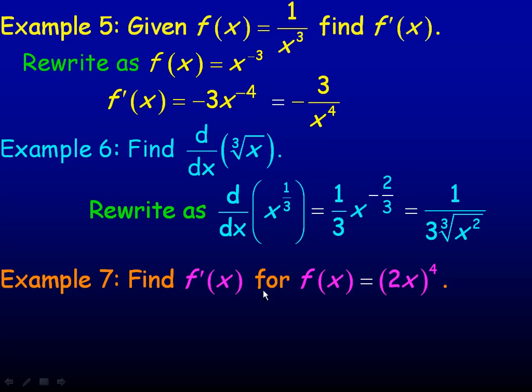Now in example 7, we're asked to differentiate (2x)⁴, and there is a way to differentiate this. It's called the chain rule, and we'll get into that in another lesson. But what I would do for now is just evaluate this before I differentiate. Expand out (2x)⁴.